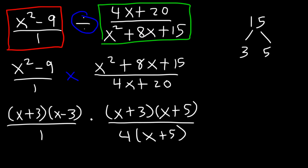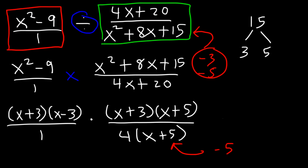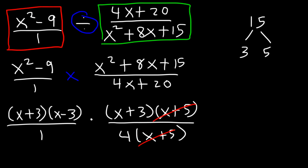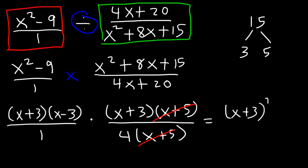Now we want to determine the excluded values. The excluded value negative 5 comes from the denominator here. Also x plus 3 and x plus 5 are in the bottom of the flipped fraction, so negative 3 and negative 5 are excluded values too. Now let's cancel — the only thing we can cancel is x plus 5. The final answer is x plus 3 squared times x minus 3 divided by 4.